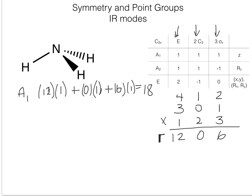That gives eighteen, and then we divide by the order of the group. The order of the group is determined by adding up the coefficients for each operation: one plus two plus three equals six. So we divide eighteen by six, which gives three A1 representations.